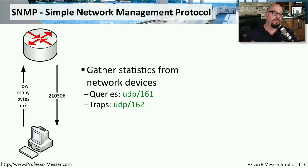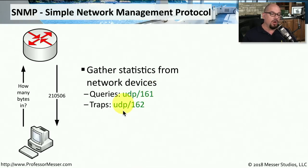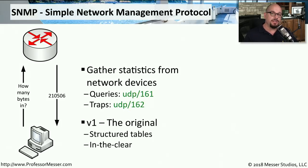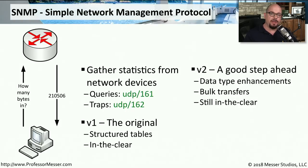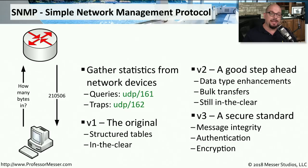Network administrators may have tens, hundreds, or even thousands of devices to manage on a single network. To constantly monitor and gather statistics from these devices, they use a specialized protocol called SNMP, the Simple Network Management Protocol. It uses UDP port 161 to query devices, and can receive alarms or traps from those devices over UDP port 162. There may be three different versions of SNMP running in an environment. Version 1 provided a non-encrypted, in-the-clear method. Version 2 still communicated without encryption, but allowed a client to ask many questions at the same time and receive a bulk transfer in response. Many organizations today use SNMP version 3, which provides message integrity, an authentication method, and full encryption of all information sent between the client and the remote device.